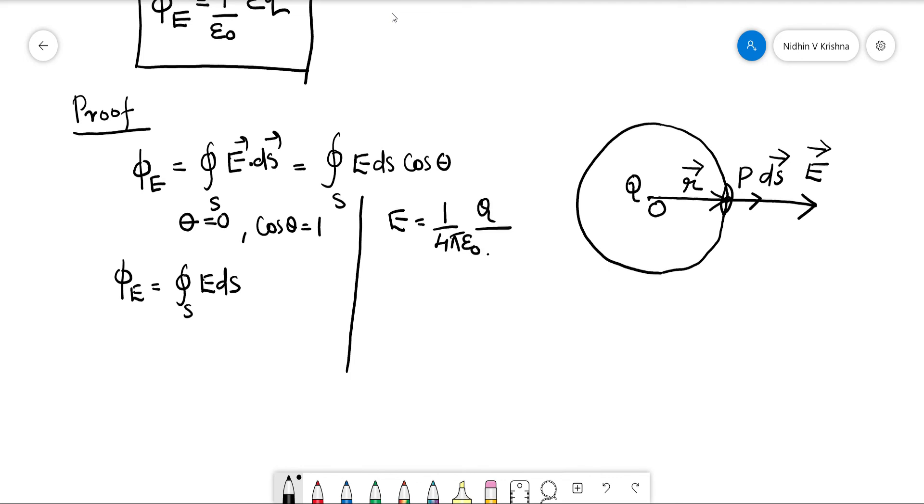That is, its magnitude will be constant. So when we consider this fact in this particular expression, how it's going to be like: phi_E equal to E's value is constant, so therefore it comes out 1/(4πε₀) q/r² into closed surface integral of dS. So you see this, the closed integral of dS...